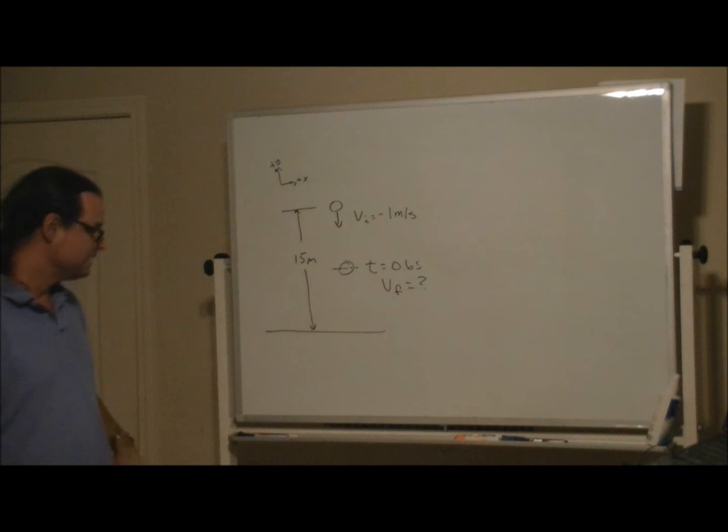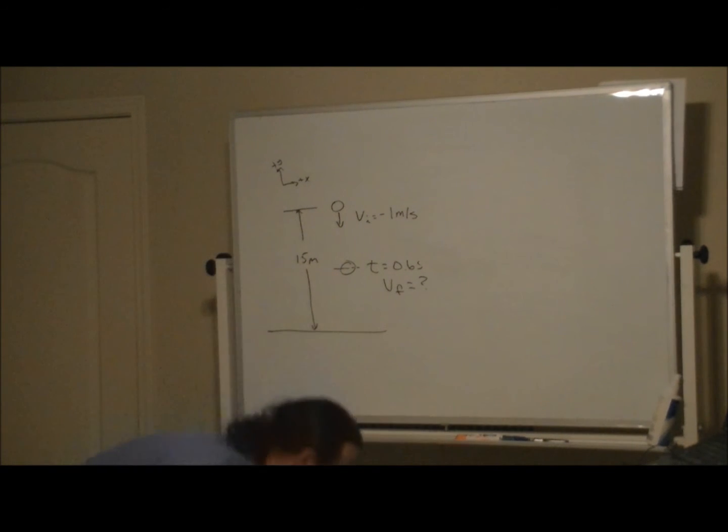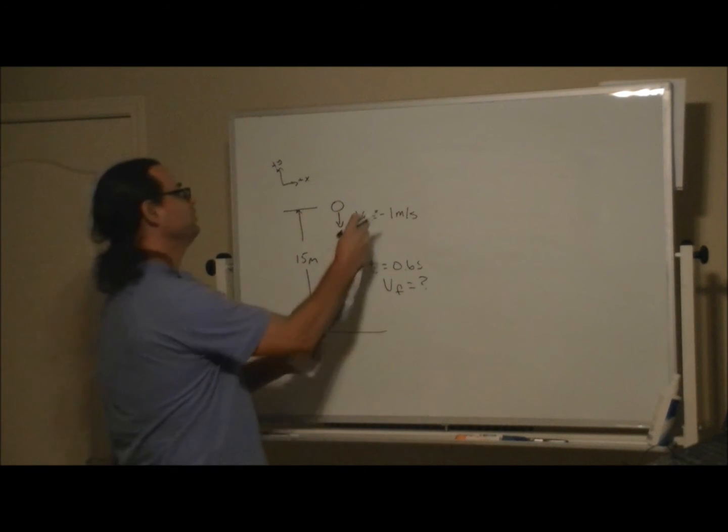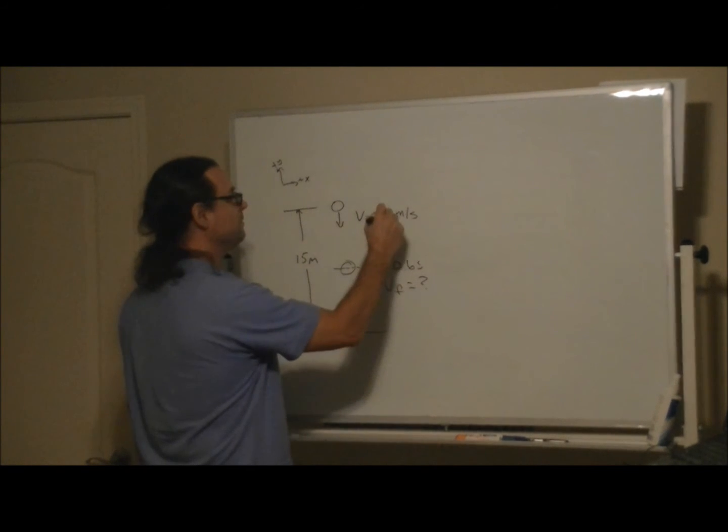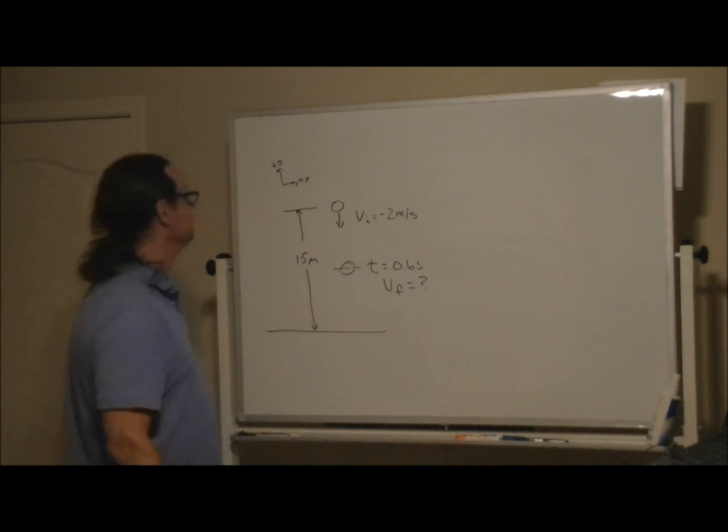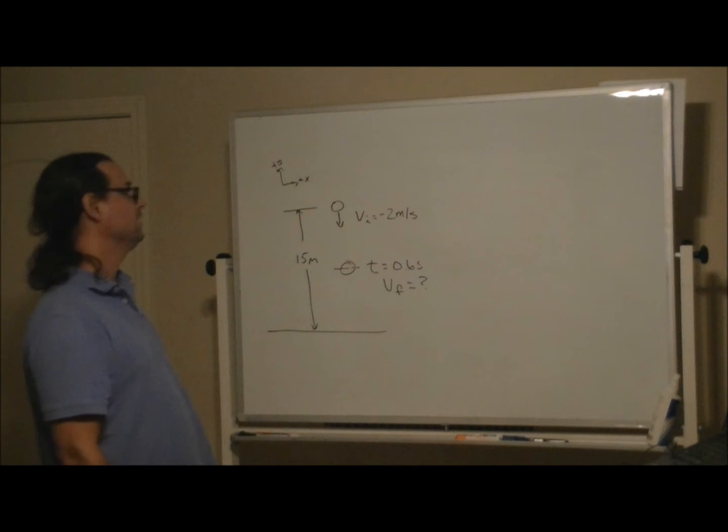I'm going to change this a little bit so as to not deprive the students an opportunity to work it on their own. I'm going to make the initial velocity 2 meters per second rather than 1 meter per second.